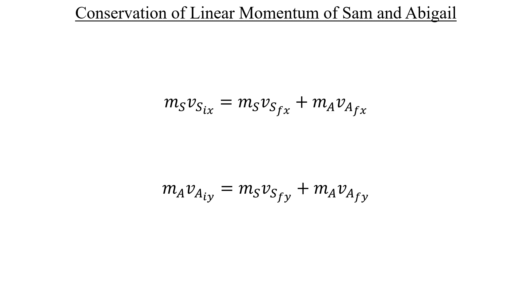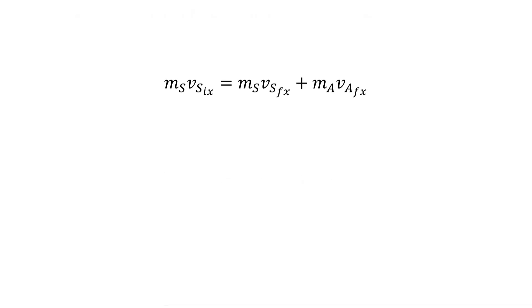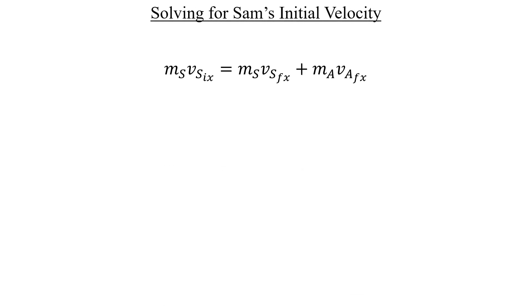Let's start with Sam in the x direction. We want to isolate the velocity variable found on the left here, so let's divide both sides by Sam's mass. If we simplify this, Sam's mass will divide out completely from the first term, and we'll have a ratio of Abigail's mass to Sam's in the second.